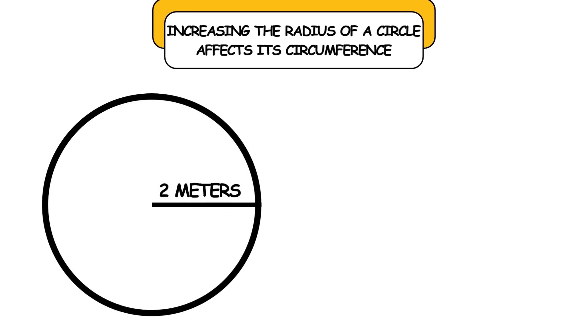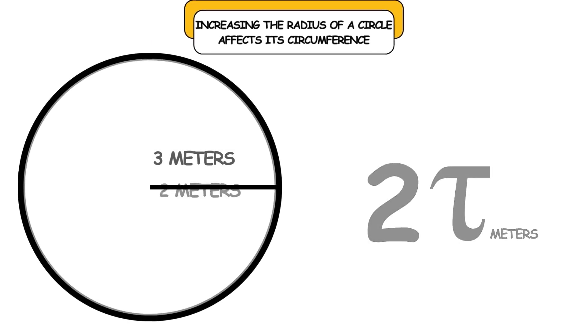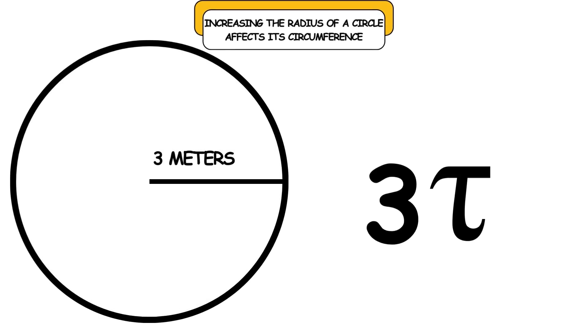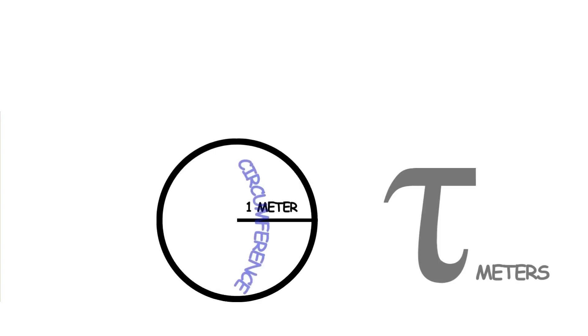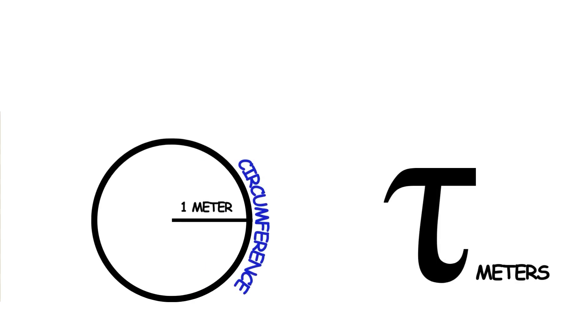For a radius of 2 meters, the circumference is 2 tau meters. A 3 meter radius yields a 3 tau meter circumference. In general, increasing the radius by 1 meter increases the circumference by tau meters. The circumference is a constant multiple of, and therefore proportional to, the radius.